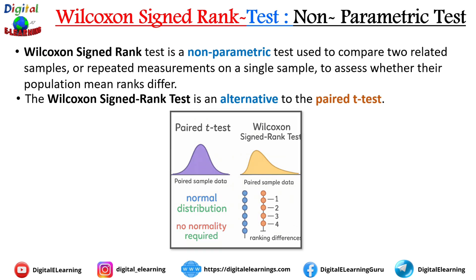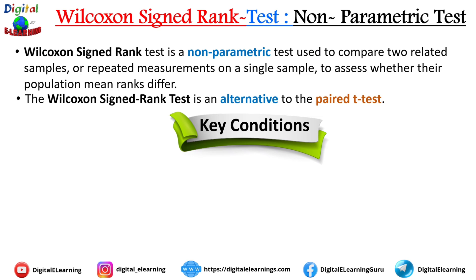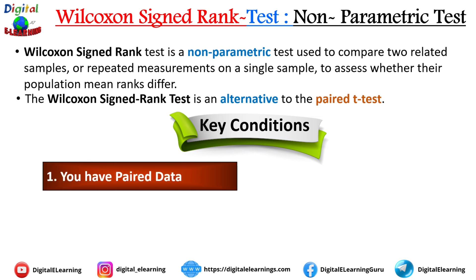Now let us look at some key conditions. First, you need paired data — you are working with related groups, for example before-and-after measurements from the same individual or matched subjects in a study. The observations in each pair are linked in some meaningful way.